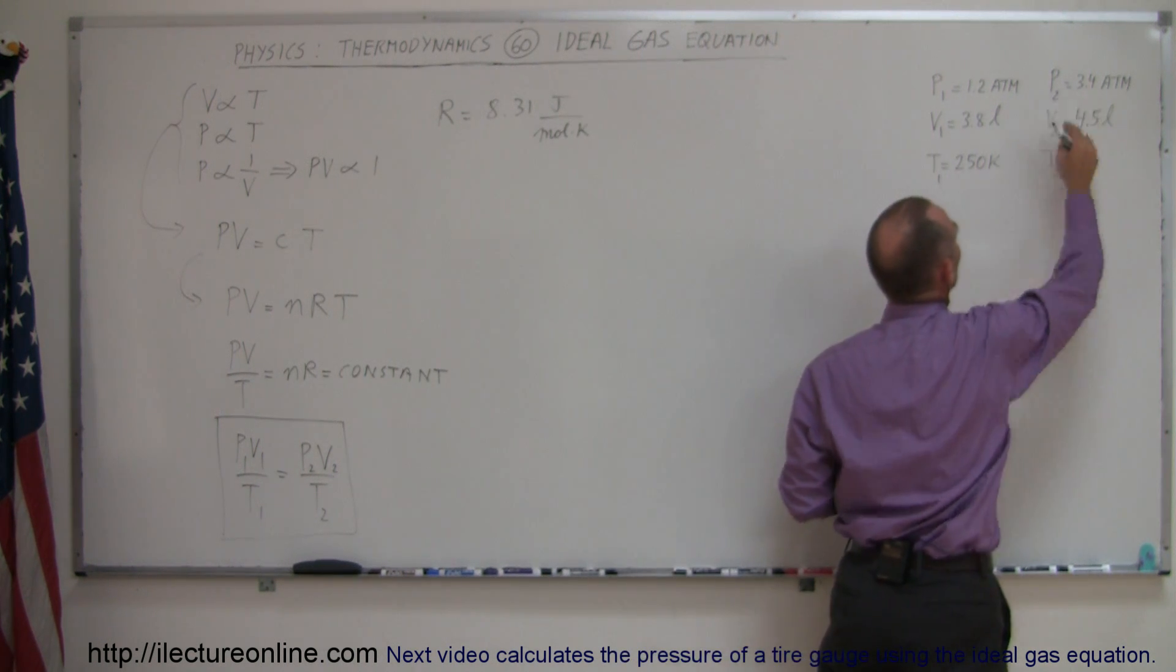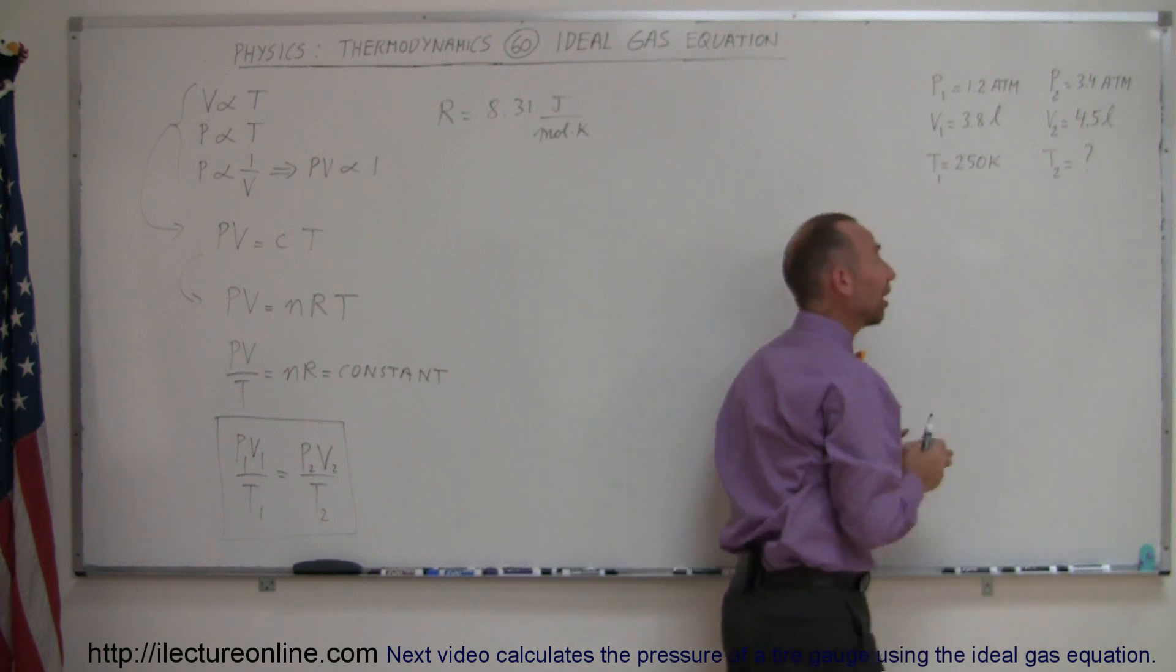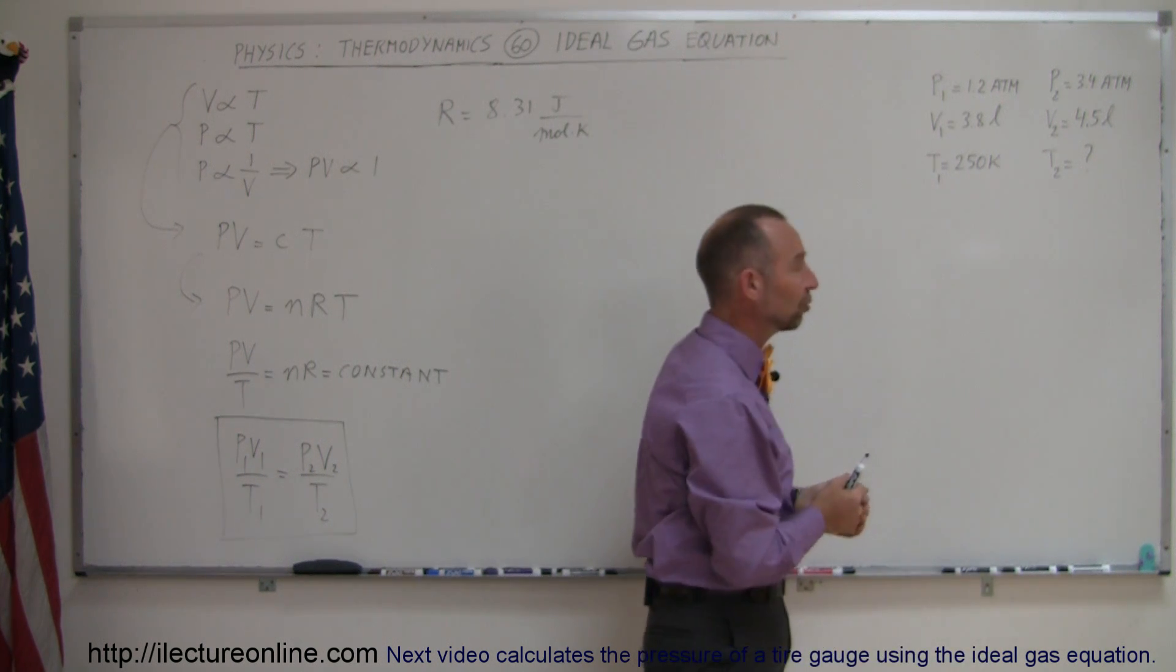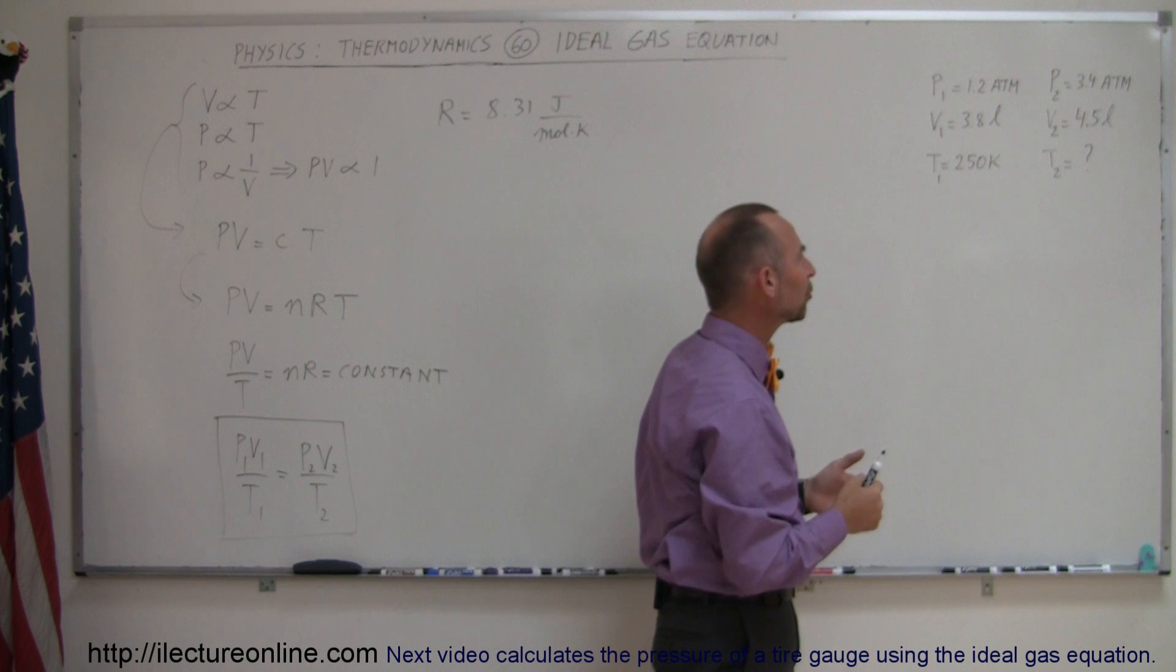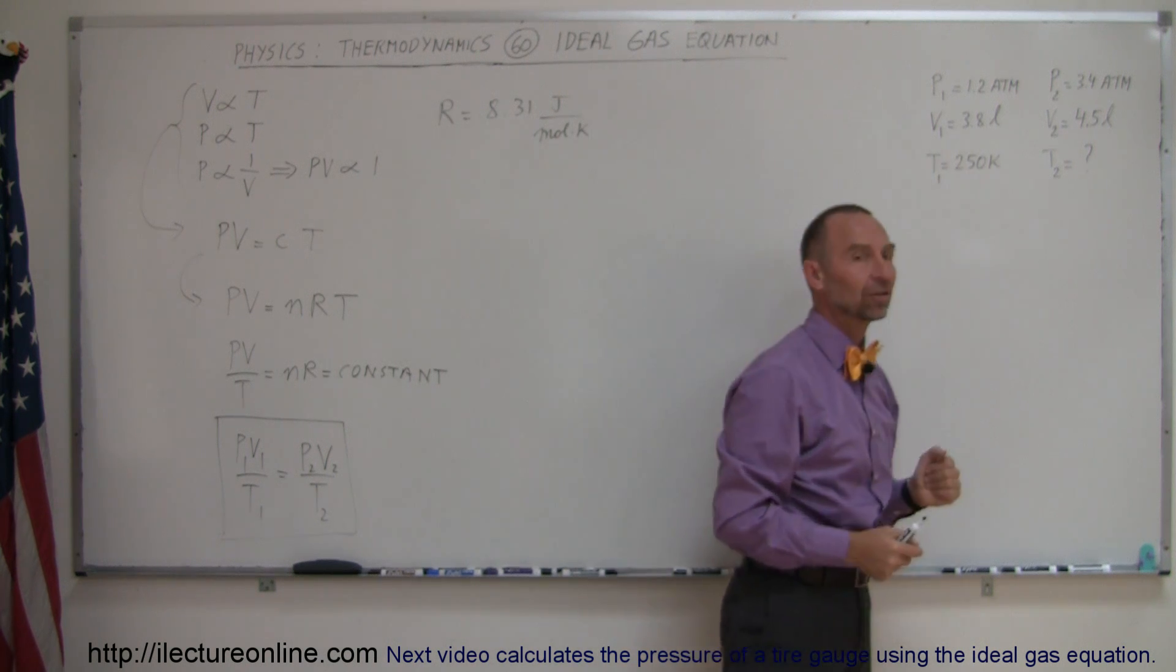So in other words, the pressure increases to 3.4 atmospheres, the volume increases to 4.5 liters. What would be the temperature of this gas at its final state?